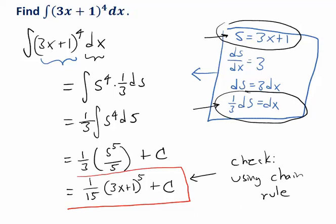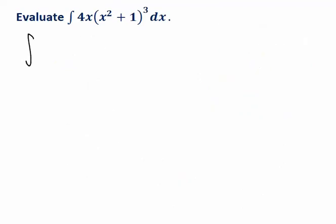So let's explore this with another example. Let's try finding the antiderivative of 4x times x squared plus 1 cubed dx. So again, I'm going to make a substitution. And off to the side, I'm going to make a note of what that substitution is. Let's use another variable.